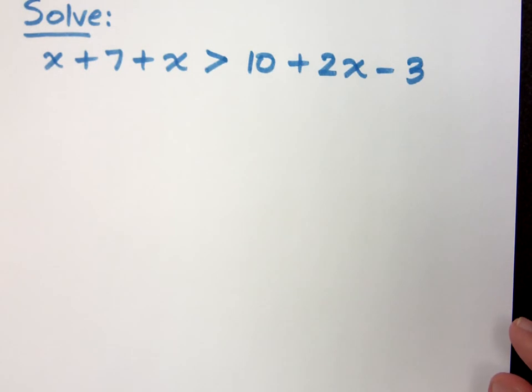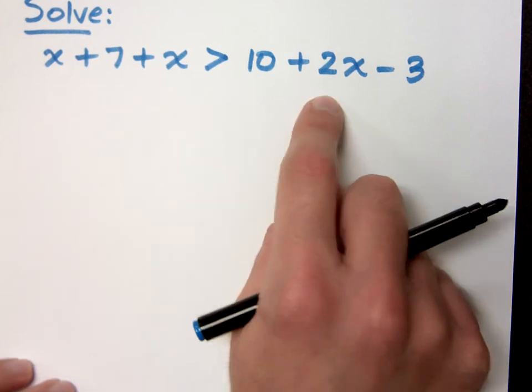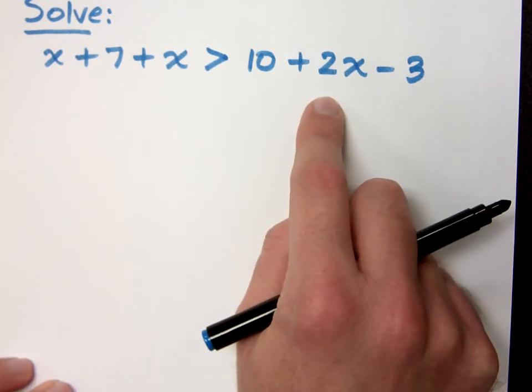Okay, let's try one more example before things get super crazy. In this inequality, we see that it's linear. Let's go ahead and combine like terms, make it look a little bit nicer.